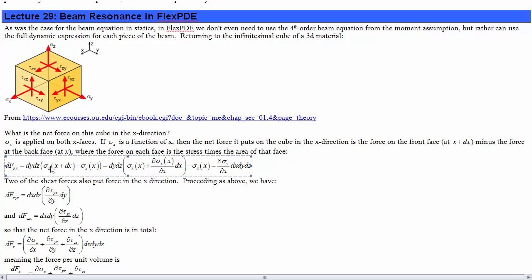So we'll say the net force due to sigma x is the area of the face times the stress on the front face minus the stress on the back face. If we let the front face be coordinate x plus dx, and the back face is at x coordinate x, then the stress on the back face is sigma x at x.